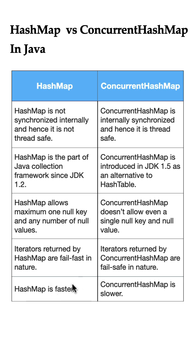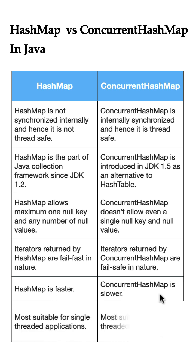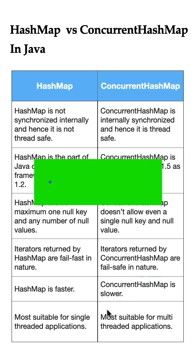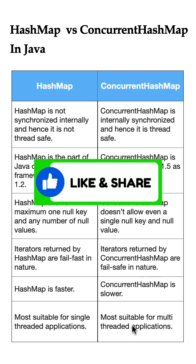HashMap is faster in single-threaded scenarios, whereas ConcurrentHashMap can be slower due to its internal synchronization. HashMap is most suitable for single-threaded applications, whereas ConcurrentHashMap is most suitable for multi-threaded applications.